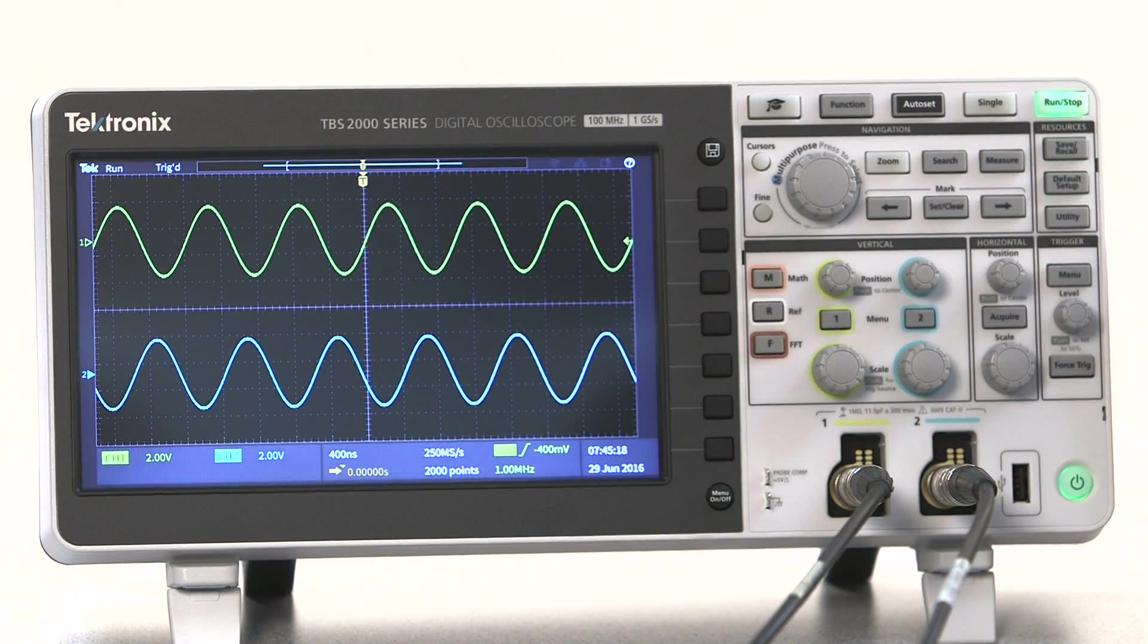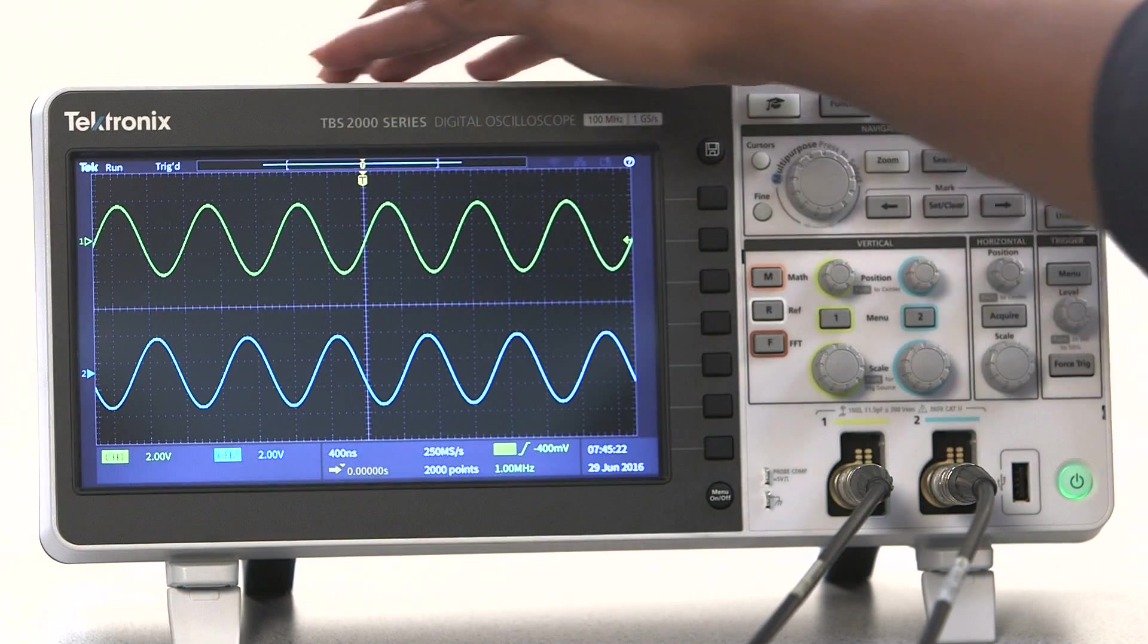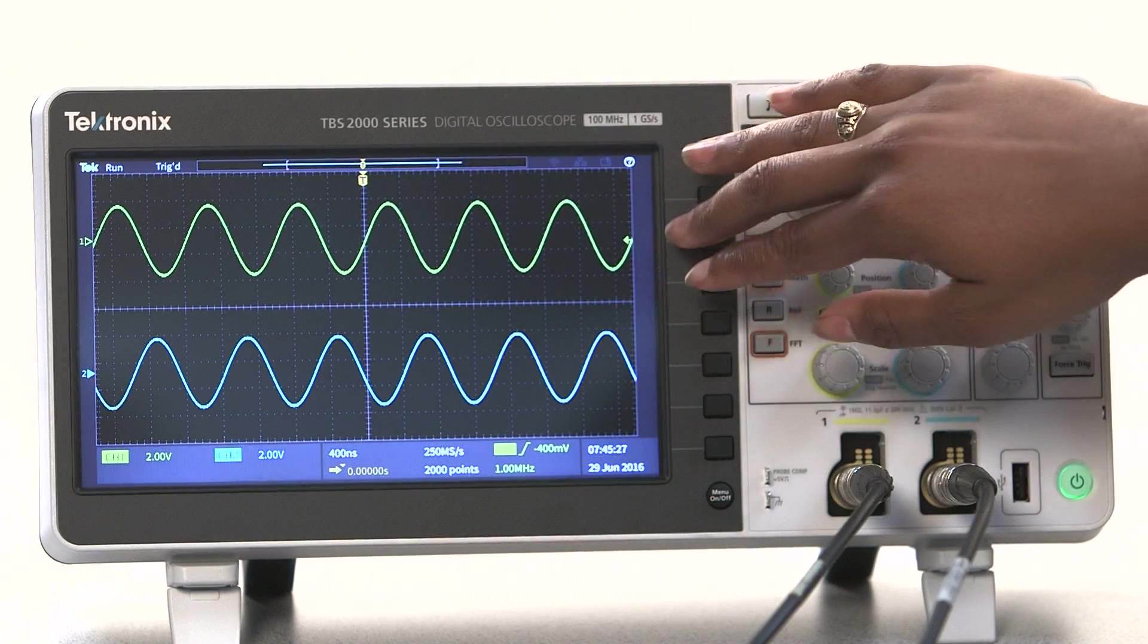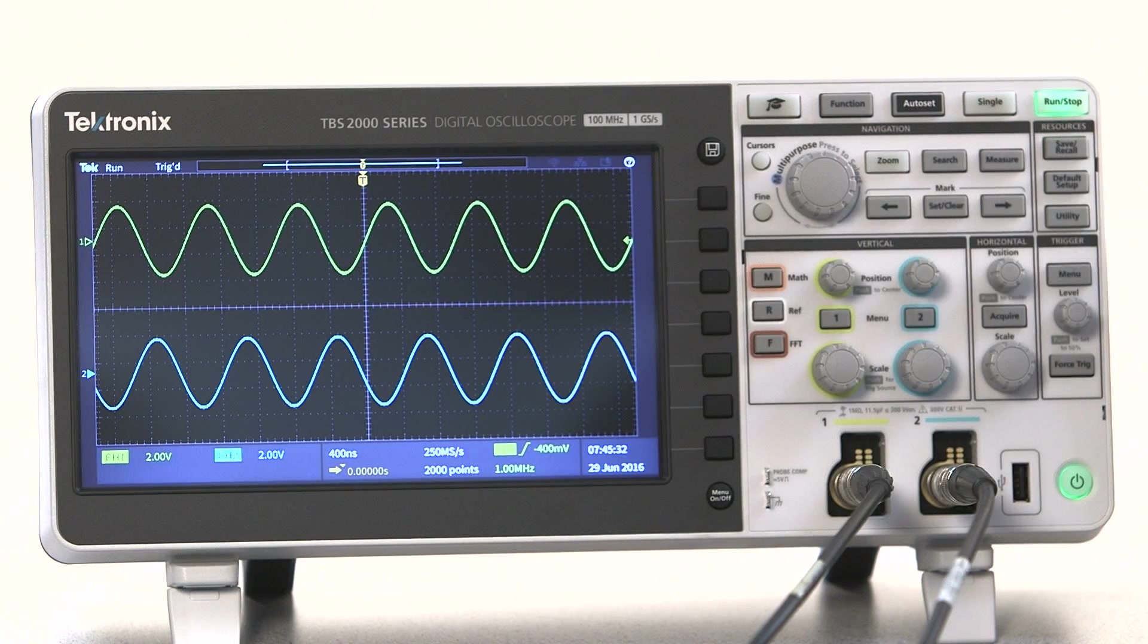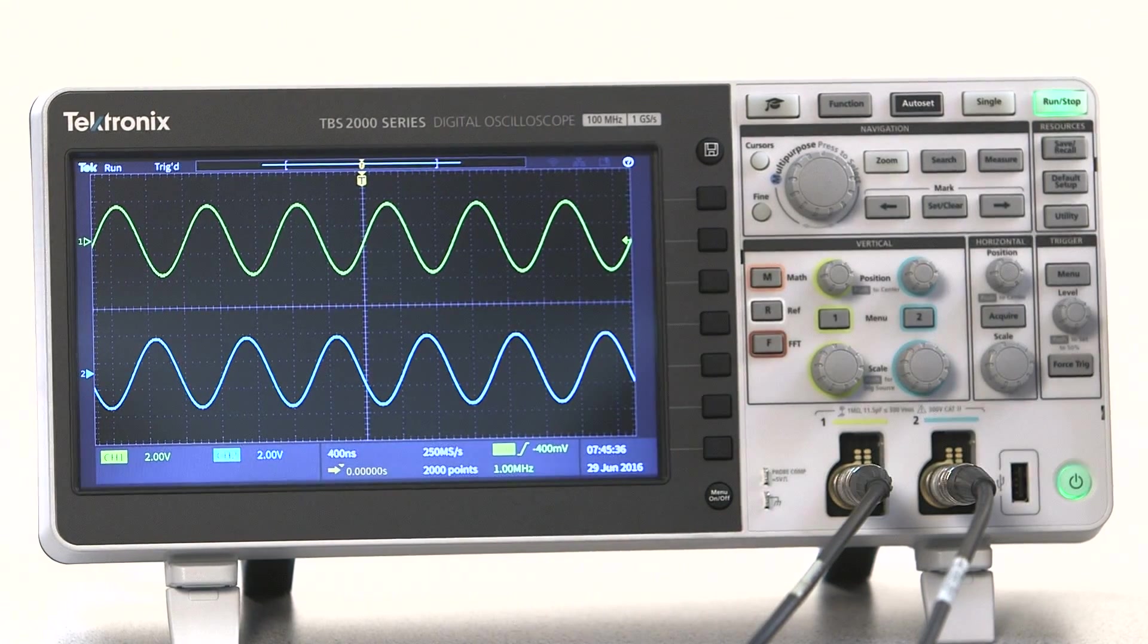I'll explain edge triggering in a minute, but the part of the waveform before the trigger point is called pre-trigger data, and the part after the trigger is called post-trigger data. In the last video, I talked about horizontal position, which moves the waveform left to right. Notice how it moves the triggered point.